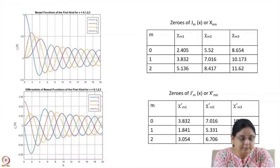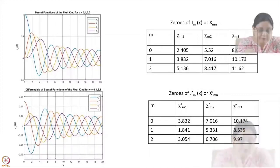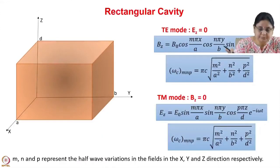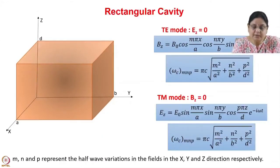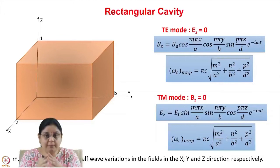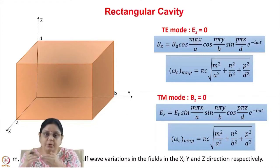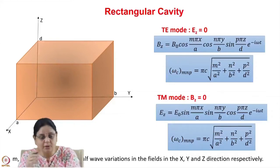The zeros of both the Bessel function and its derivative can be found from graphs or tables. So far, boundary conditions were applied in two directions and the wave propagated freely in the third. Now, for a cavity, we apply boundaries in all three directions, so the wave forms a standing wave in all three directions with no propagation.